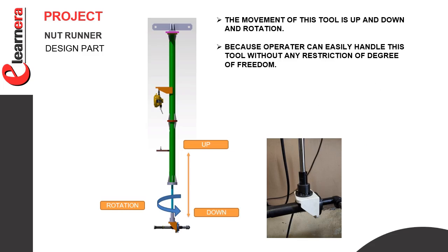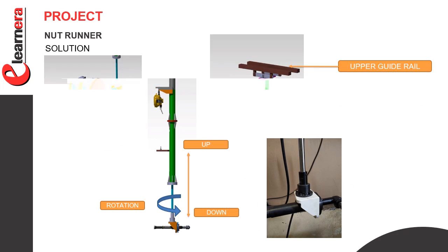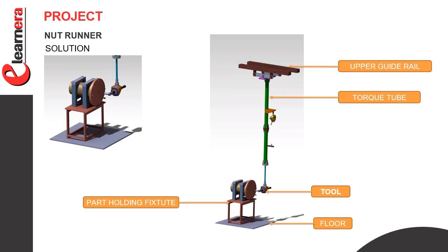In this slide we learn about the movement of the top tube. The image shows the movement of the tool — the operator can easily handle this tool without any restrictions while performing the tightening operation. The LM rod slides in the linear bush, so the tool can easily go up and down. We use a bearing mechanism for the rotary tool, so rotation is also achieved. The image shows the arrangement of the part holding fixture and top tube — the top tube is fixed in the upper guide rail, and the fixture rests on the floor. After that we create a DAP drawing.